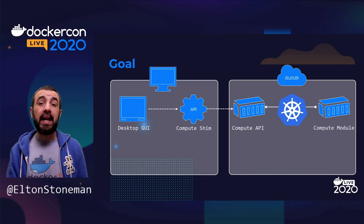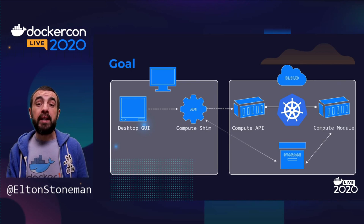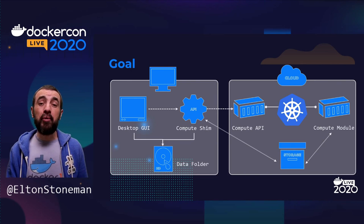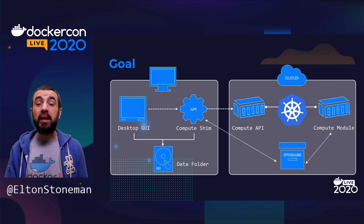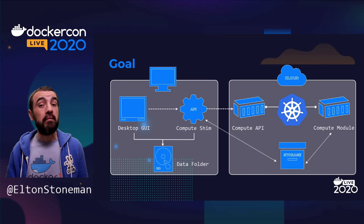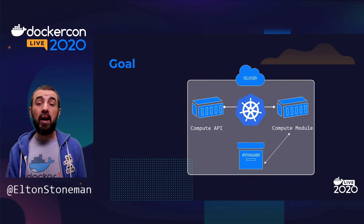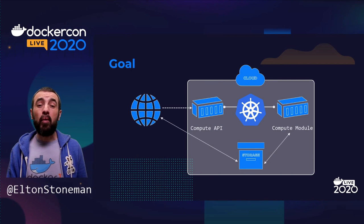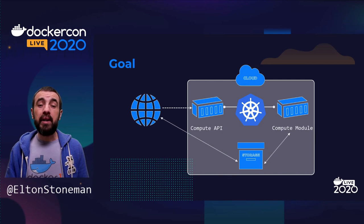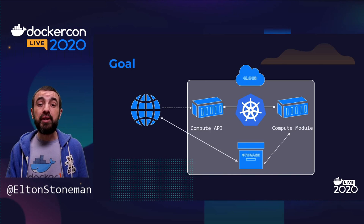We wanted the new delivery to work with the existing desktop. So you'd still have your desktop UI, but instead of calling the compute layer directly, it goes into a shim that looks the same but actually sends the request for compute onto the API. The shim also takes care of moving data around — uploading files to a cloud blob storage component where the compute container writes output, then copying that down to the local file system. So as far as the UI is concerned, it works in exactly the same way, but now the whole compute layer is hosted in the cloud with a public API.